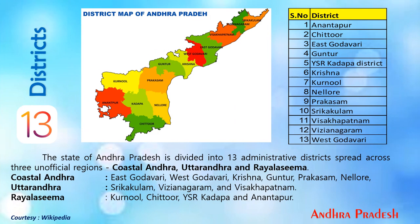Andhra Pradesh comprises 13 districts, which are divided into three unofficial regions: Coastal Andhra, Uttar Andhra, and Rayalaseema. Certain districts are split across each region — you can go through the list to understand it in depth.